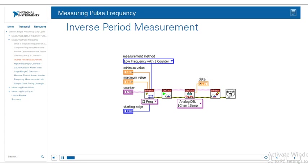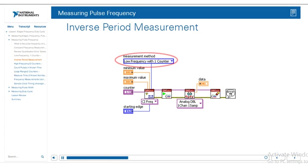In order to do this inverse period measurement in the DAQmx API, you're going to start with the DAQmx Create Virtual Channel of the CI Frequency type — that's the counter input measuring frequency. In order to get the inverse period measurement, that requires you to change the measurement method. A circle in this diagram represents a measurement method. For the inverse period, you're going to choose the low frequency with one counter option.